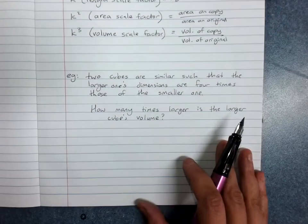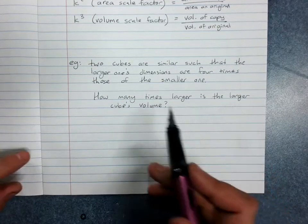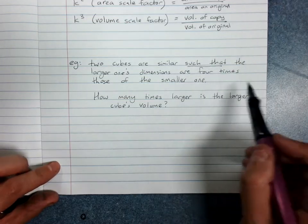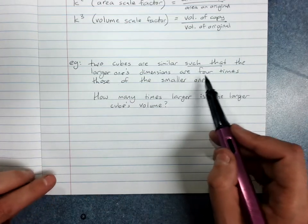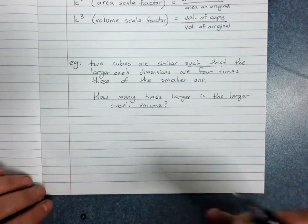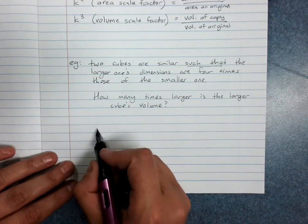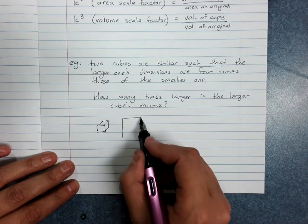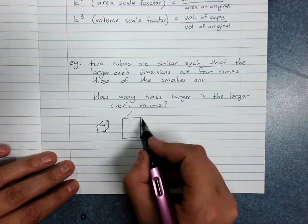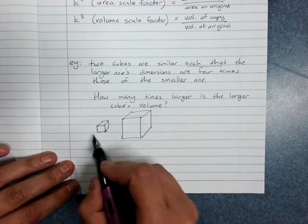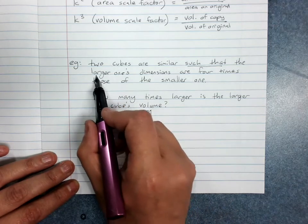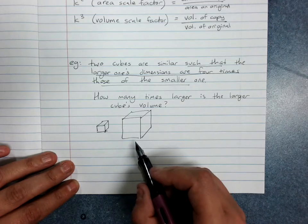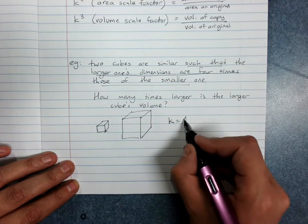So the types of questions we might get. Two cubes are similar such that, this is just describing the cubes, the larger one's dimensions are four times those of the smaller one. If there's no diagram, I would honestly suggest trying to sketch that out. Now you'll notice they don't actually say what those lengths are. They've said the larger one's dimensions are four times those of the smaller one. That means k is four.